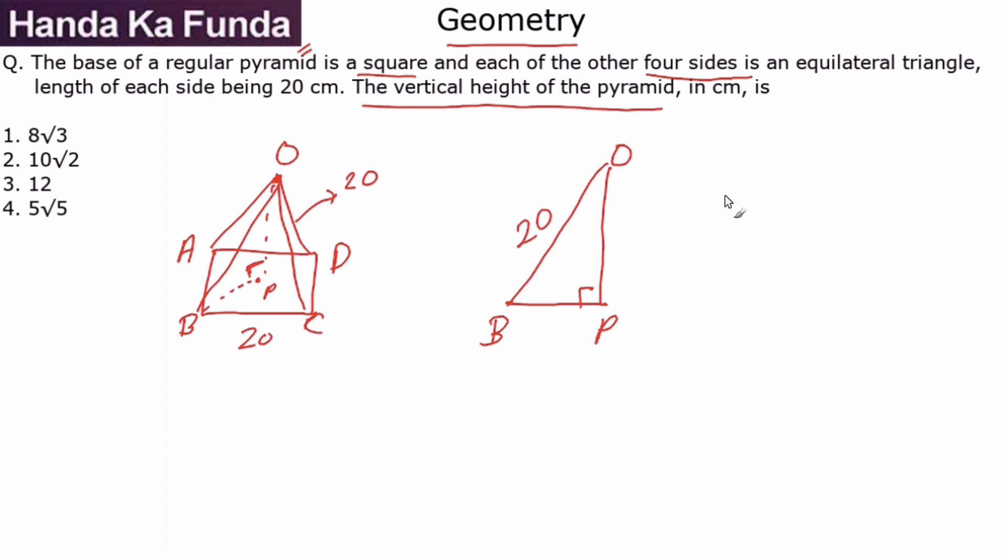What is BP? BP is half of the diagonal. And what is the diagonal? The diagonal in a square is side root 2. So BP is half of that, which is 10 root 2.